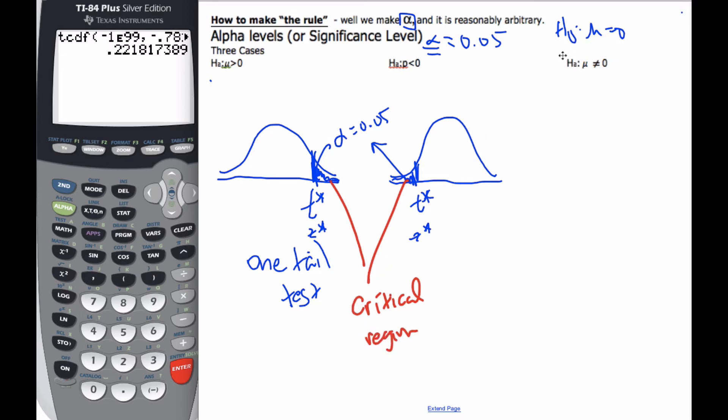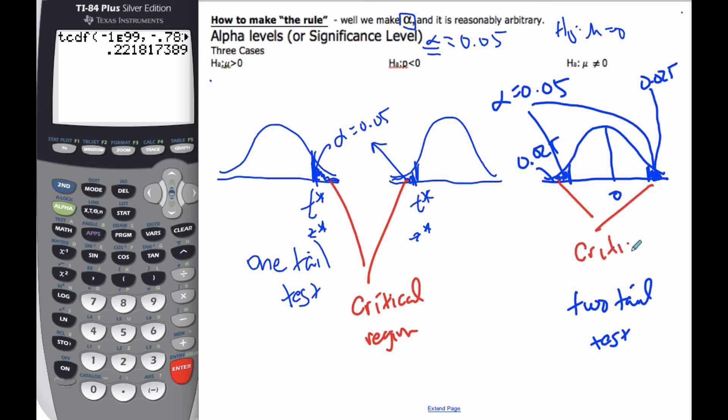If we had not equal to, I get a similar kind of graph. I get my t distribution as such, or normal distribution. Here's 0. But together this part and this part together, these here, because this is called a two-tail test, these two together add up to alpha. So this one here is 0.025 and this is 0.025. But again this is called the critical region.